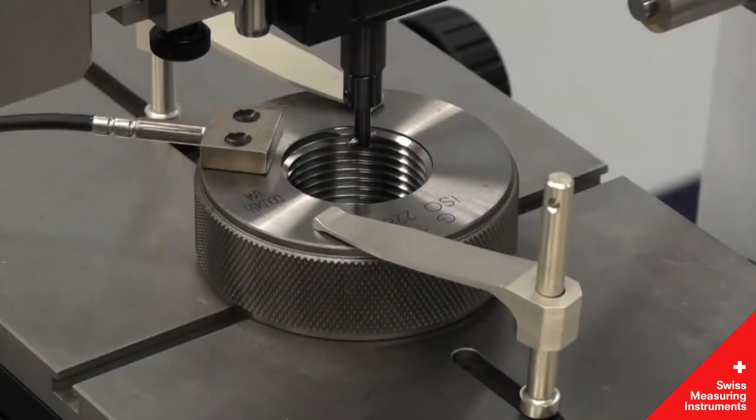Internal thread rings are a simple matter with the LabConcept Nano. For this application, the internal measuring device is outfitted with a T-shaped ruby ball probe.